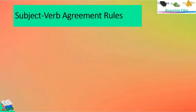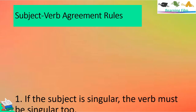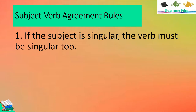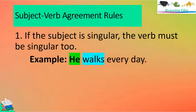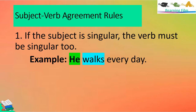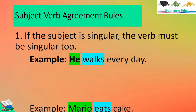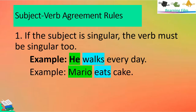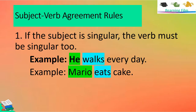Let us go through some of the subject-verb agreement rules. Rule number one: if the subject is singular, the verb must be singular too. For example, 'He walks every day.' He is the subject and it is singular, thus it needs a singular verb — walks. Another example: 'Mario eats ice cream.' Mario is singular, thus it needs a singular verb — eats.